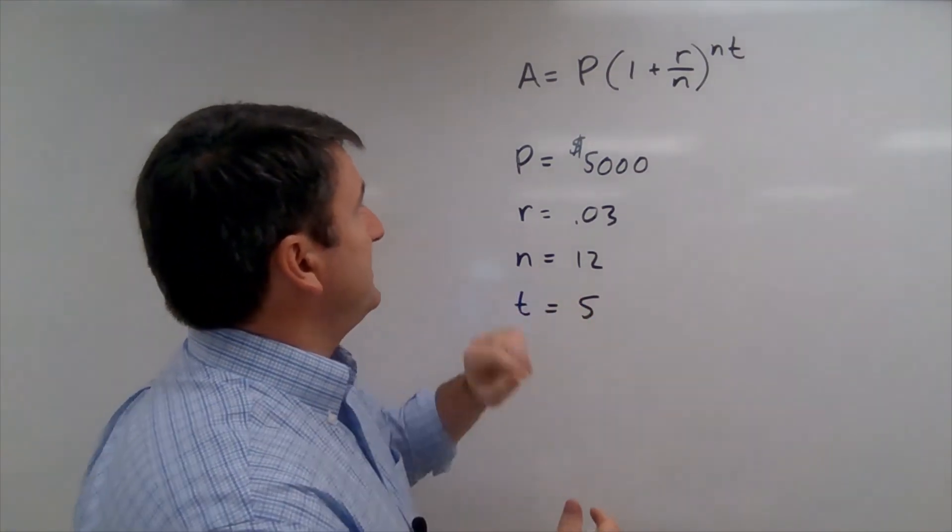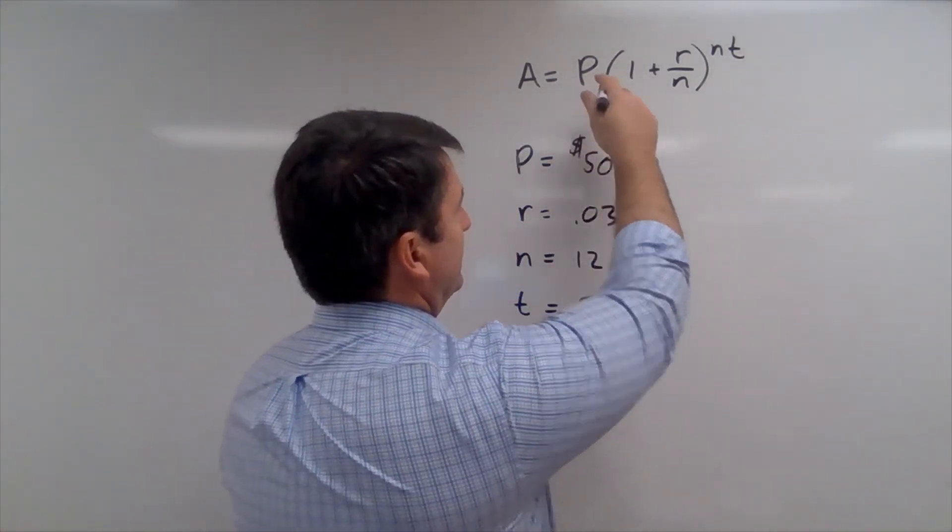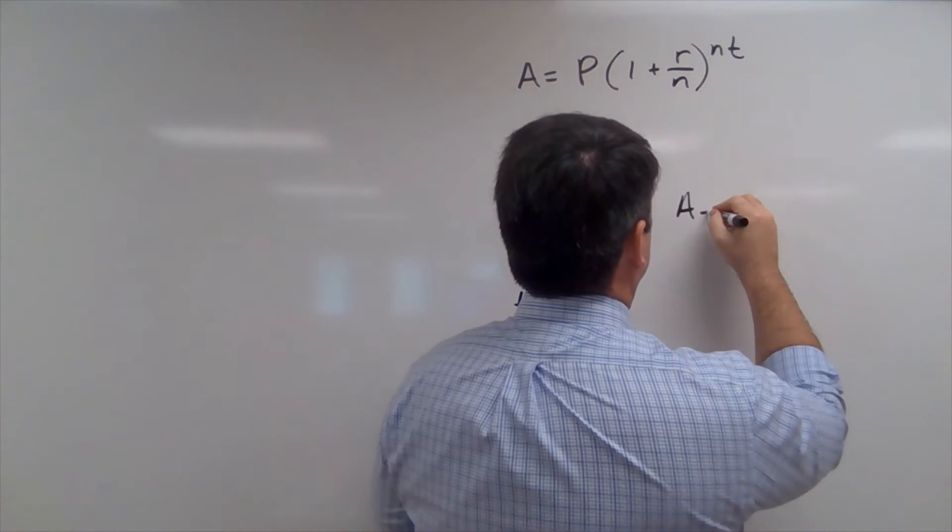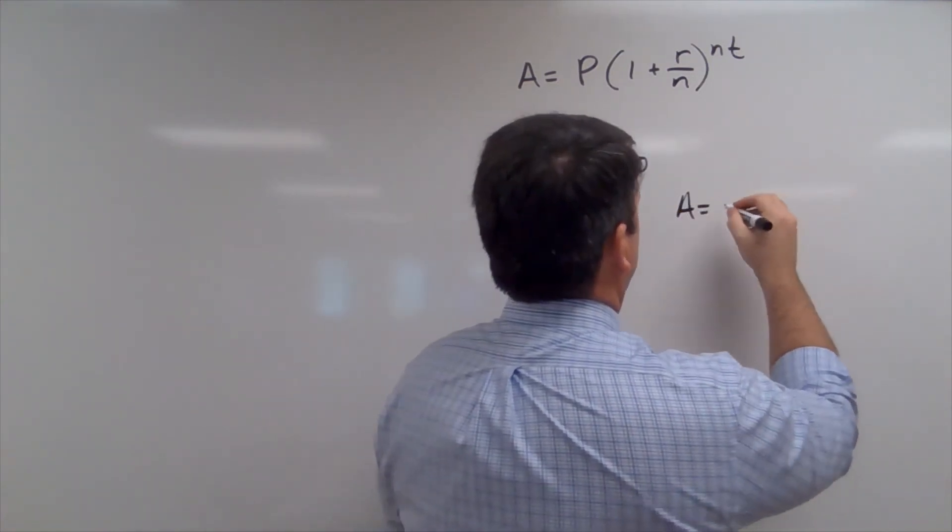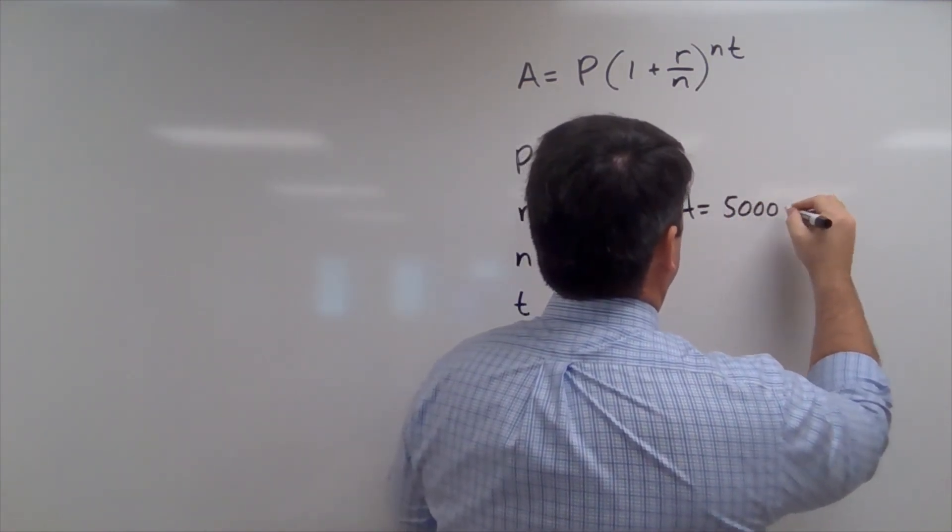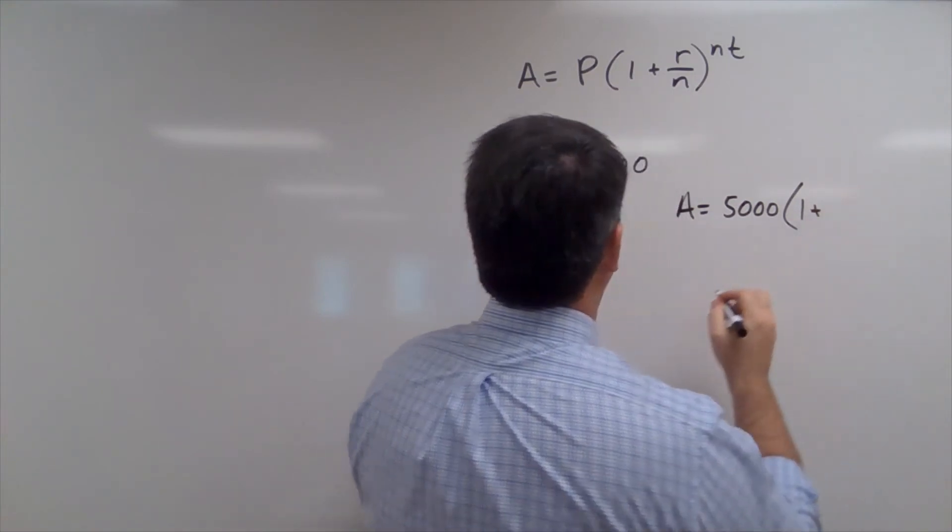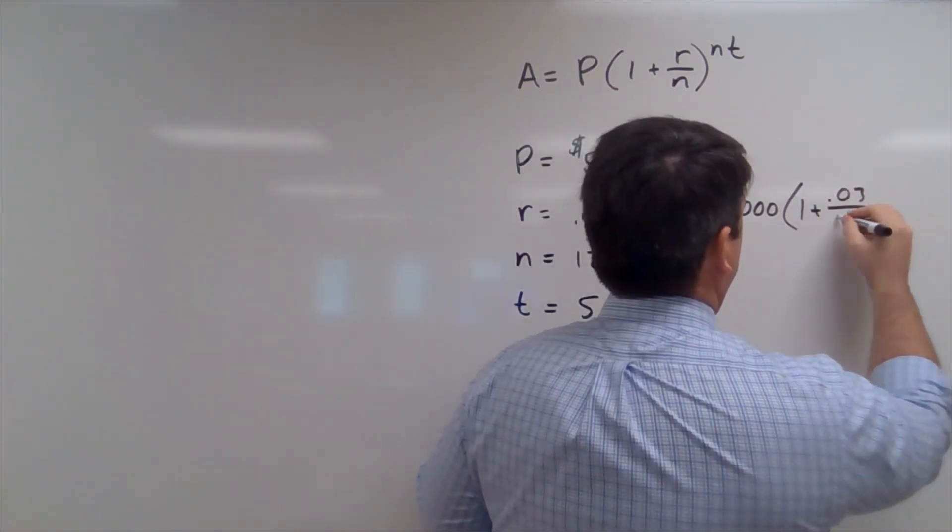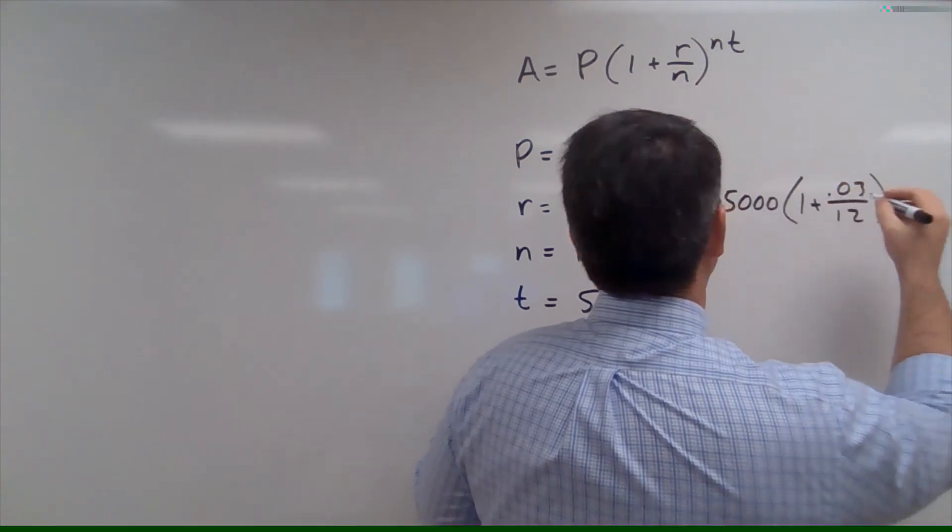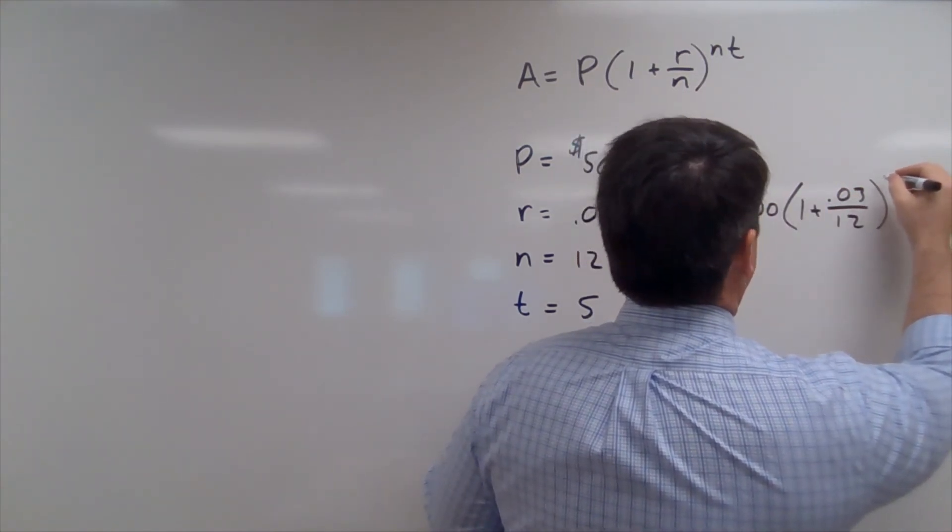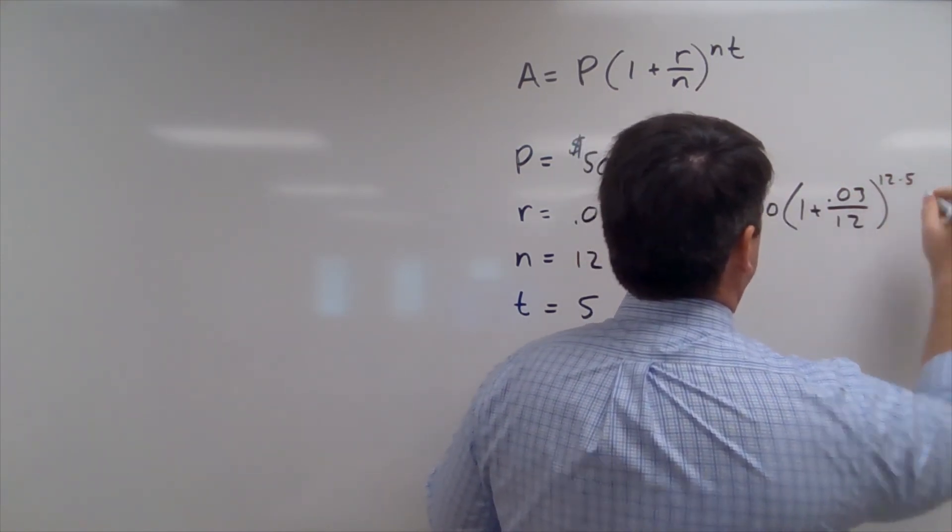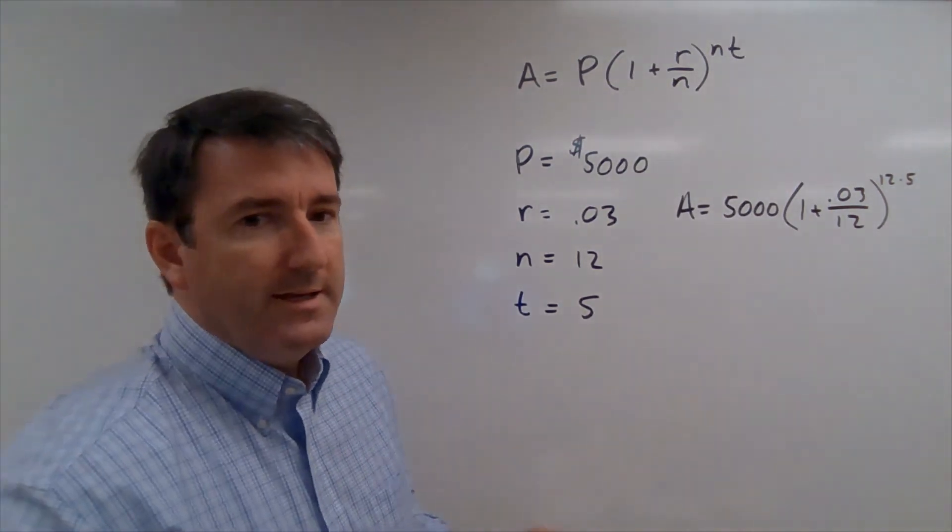All right, so now let's put that into that formula. So A is going to be equal to $5,000 times 1 plus 0.03 divided by 12, taken to the 12 times 5 power.